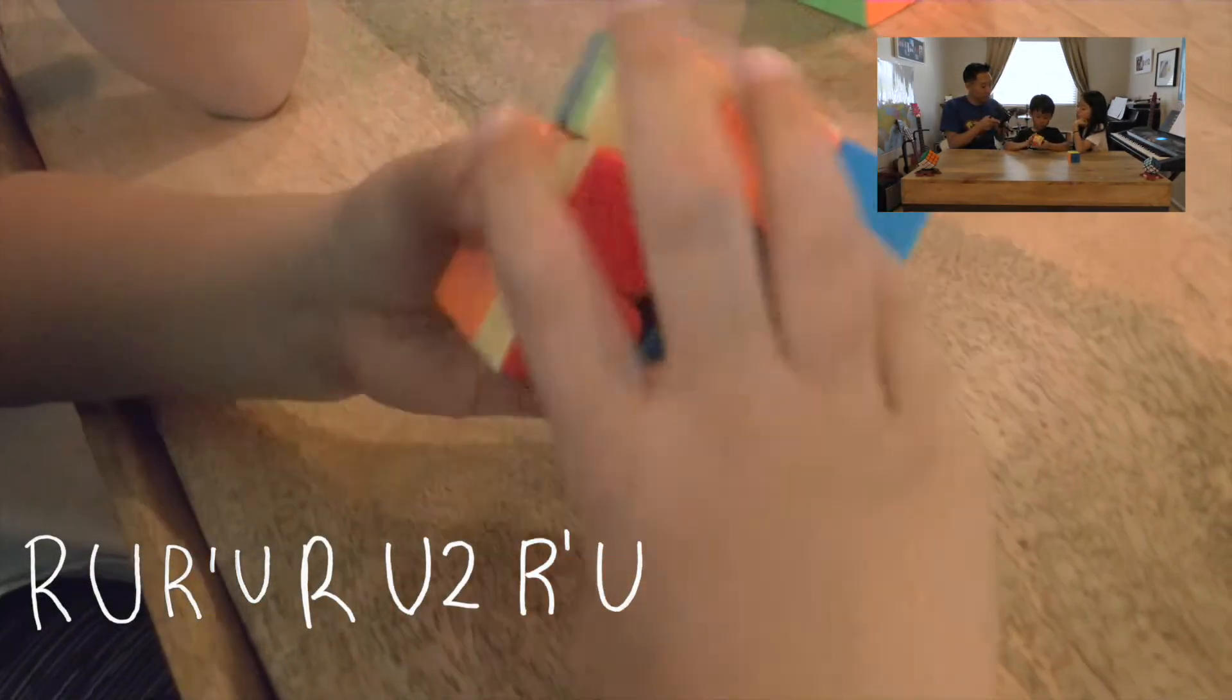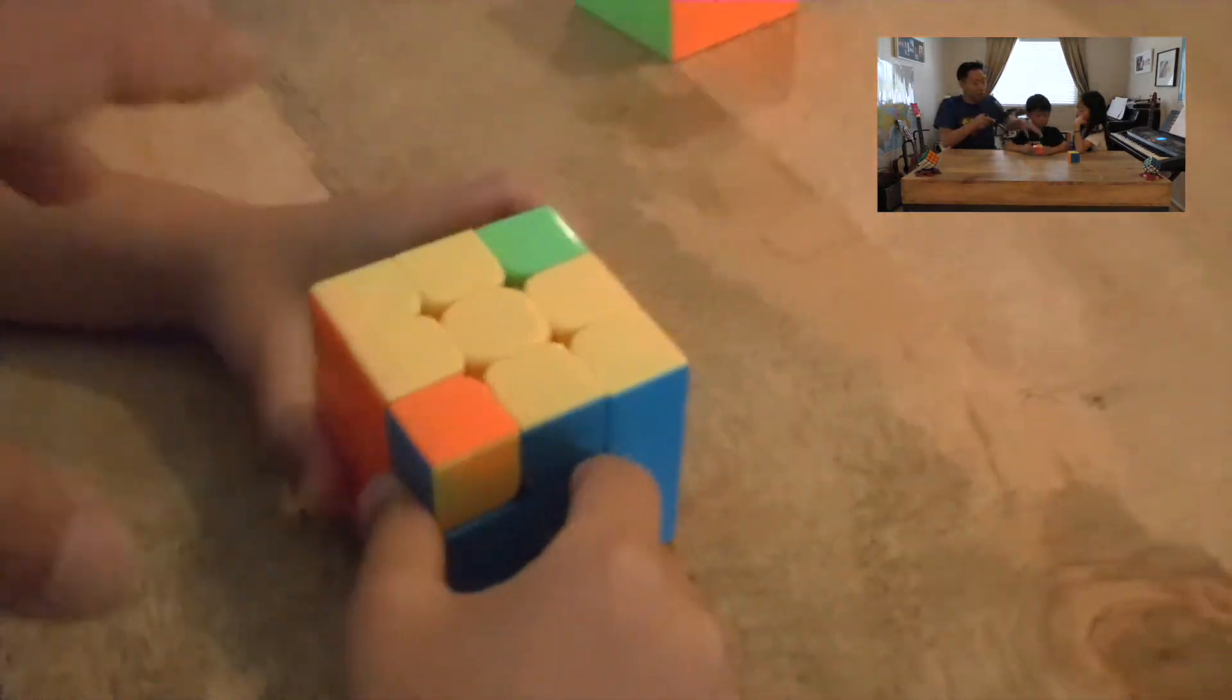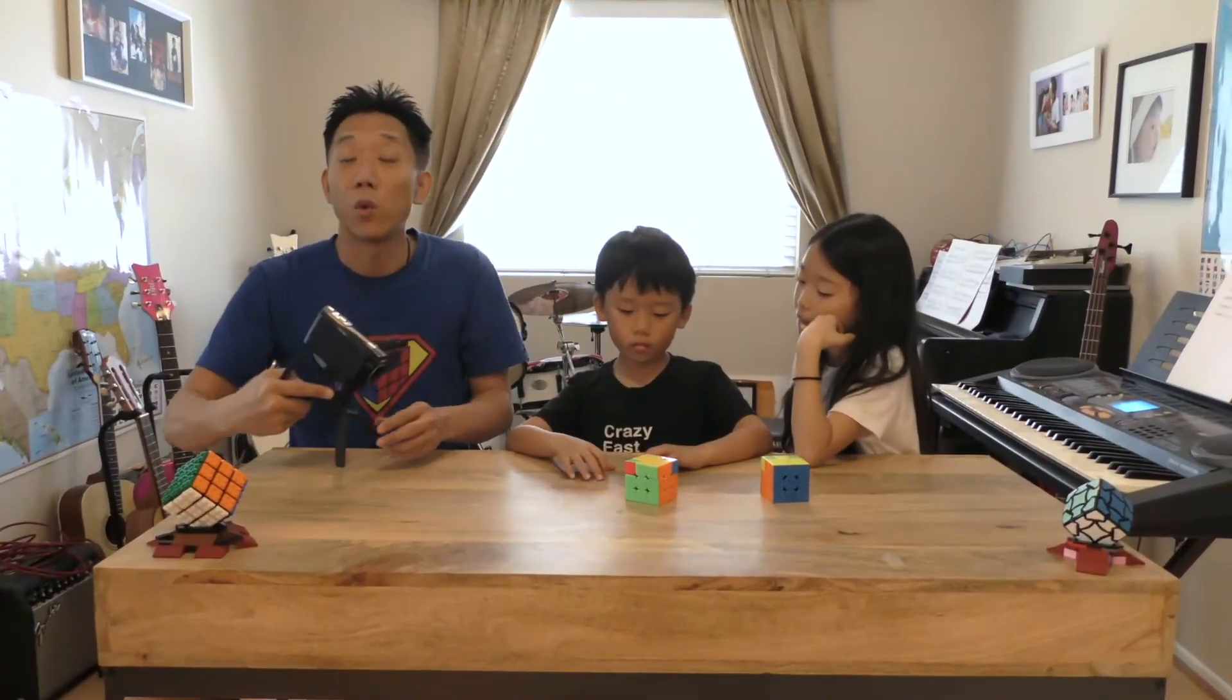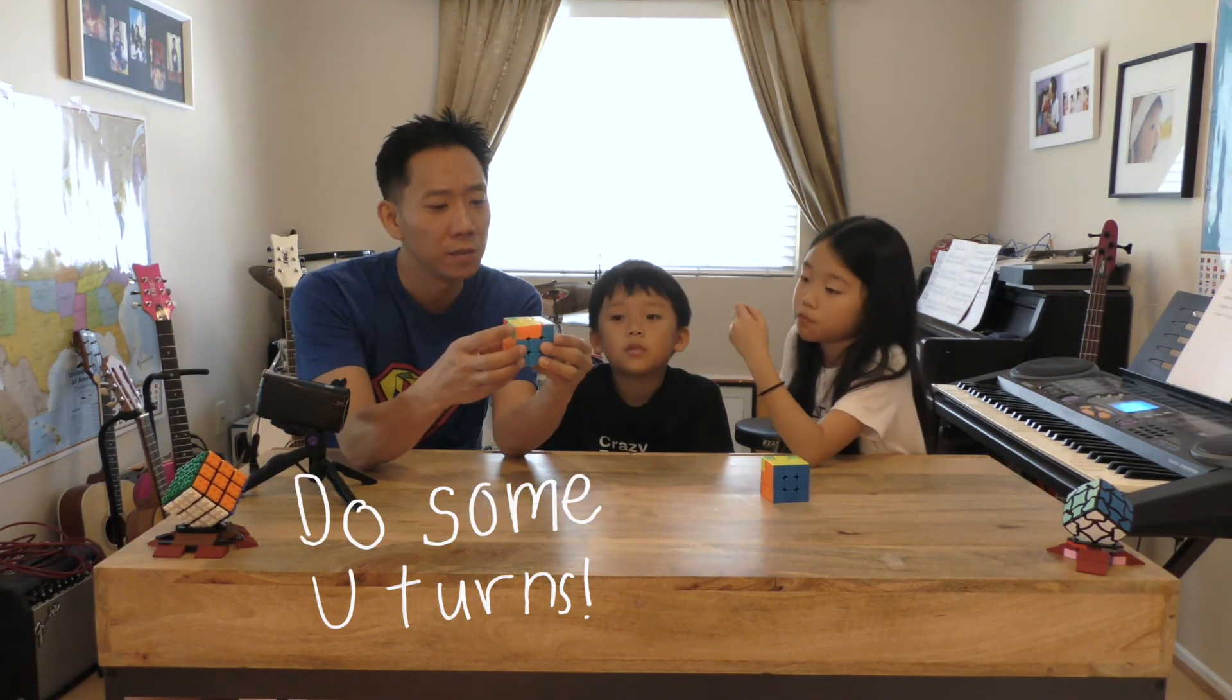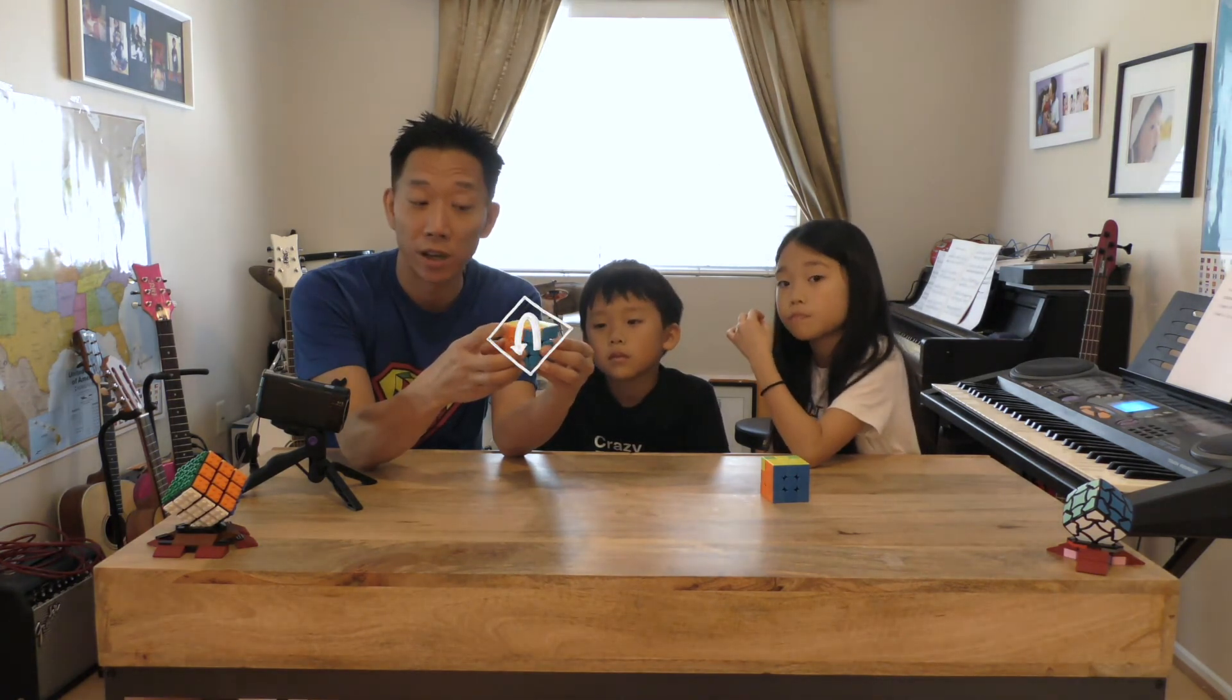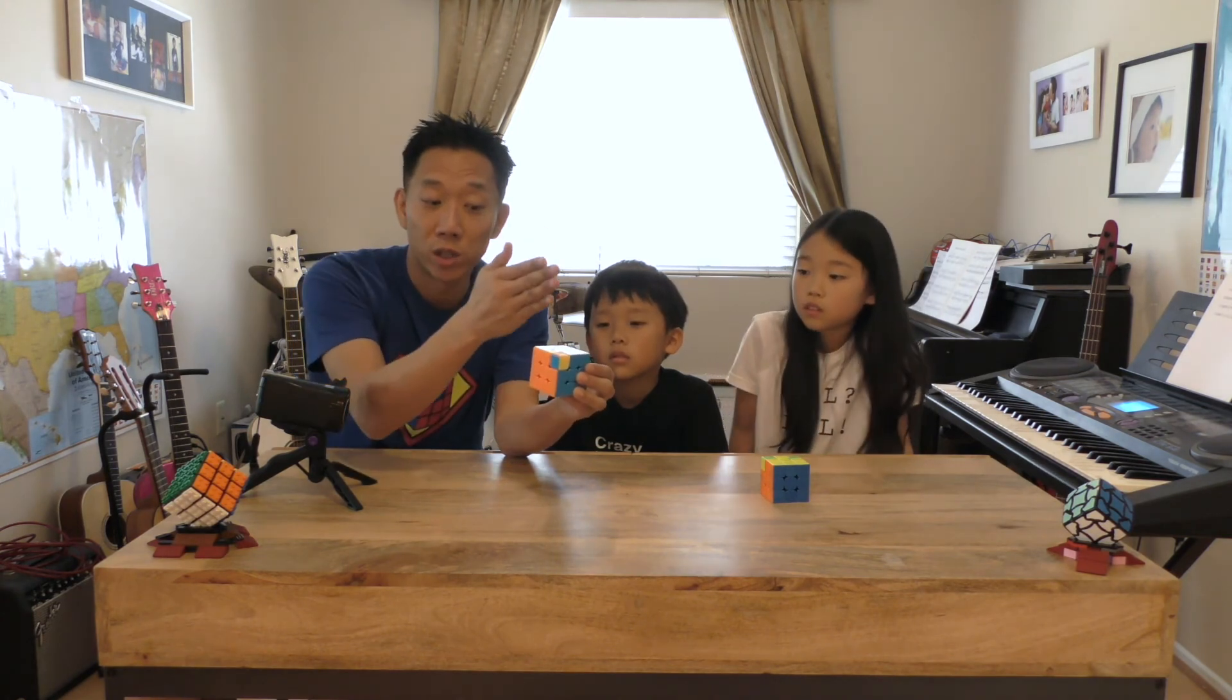So now this yellow cross is complete. When you need to complete your yellow cross in this kind of way, experiment with doing some U-turns to see how many times can I do it the least number of times. And then apply this algorithm which will switch the front and the left edge piece yellow pieces.